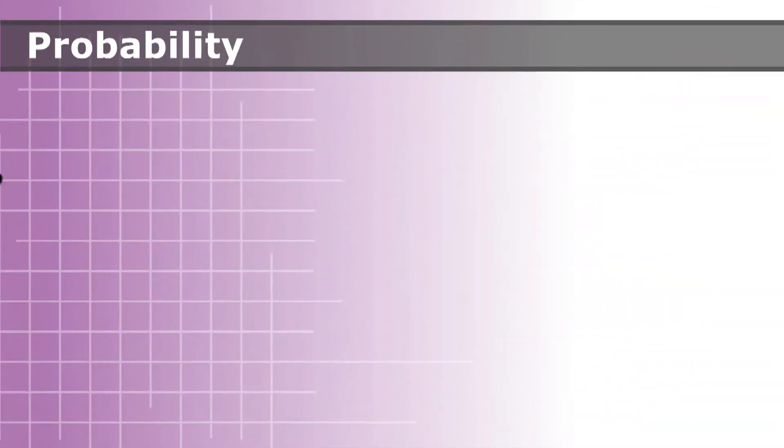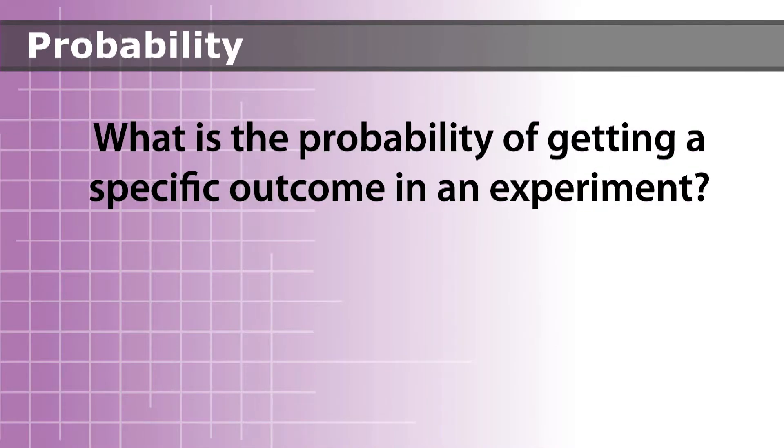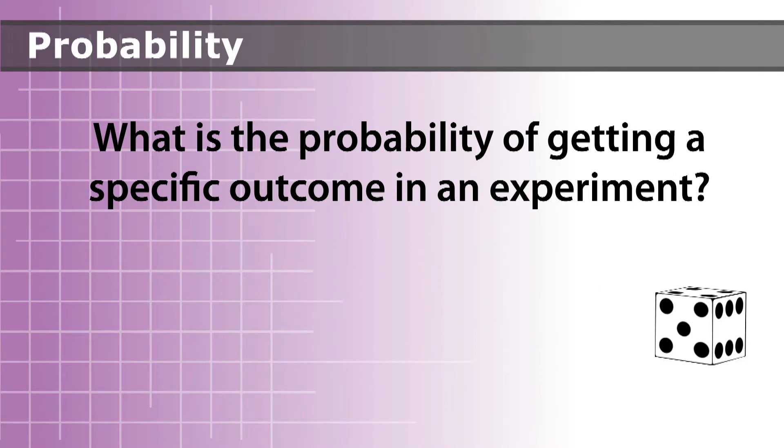We have experiments. An experiment might be rolling a die, or drawing a card from a deck, or going up to bat in a baseball game. We don't talk about the probabilities of those experiments. What we talk about are the probabilities of a specific outcome. Perhaps an outcome of rolling a die might be getting a one, or the outcome of drawing a card from a deck would be getting a jack.